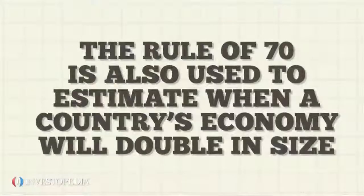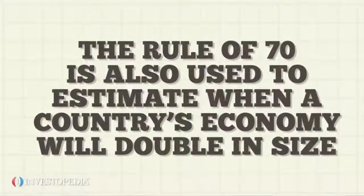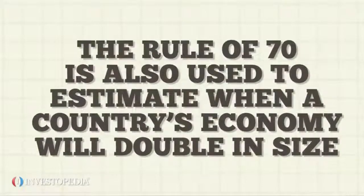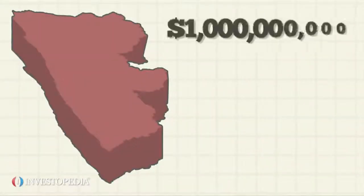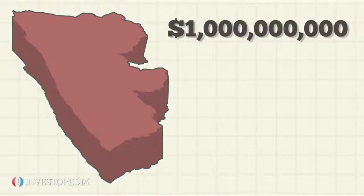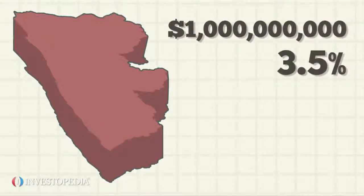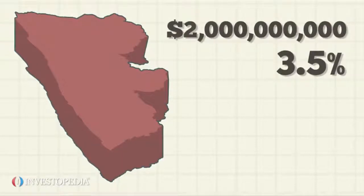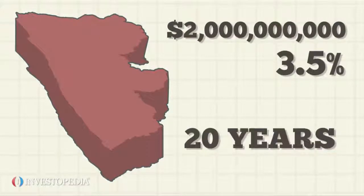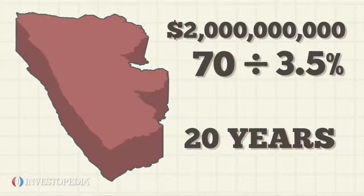The rule of 70 is also used to estimate when a country's economy will double in size. If a country's GDP is $1 billion and has a projected growth rate of 3.5%, then that country will reach a $2 billion GDP in 20 years — 70 divided by 3.5.